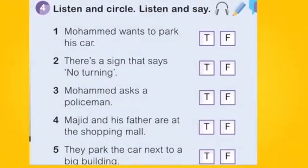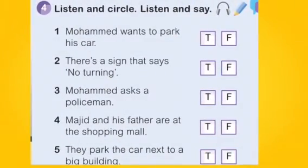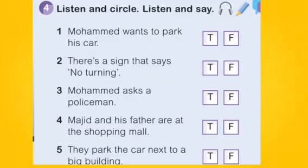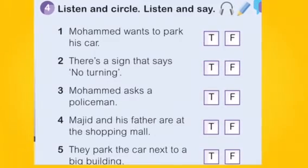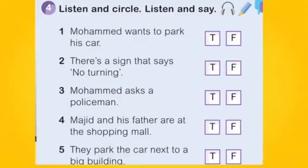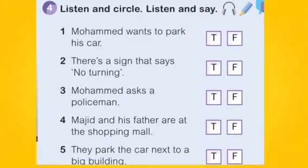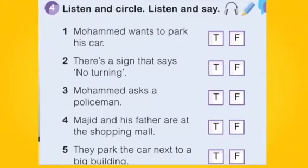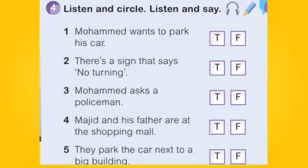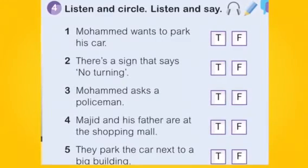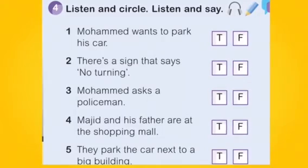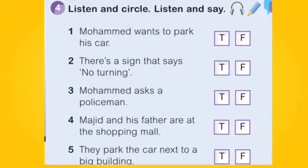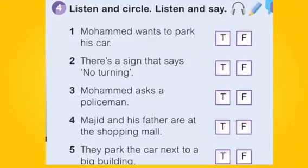Activity four — Listen and circle. Father: Marjid, you mustn't park here. Sorry. Look, it says no parking. Okay, let's try to find a good place to park. We can ask that policeman. Excuse me, where can I park at the airport? Over there, next to the big building. Thank you. Let's park here next to this big building.